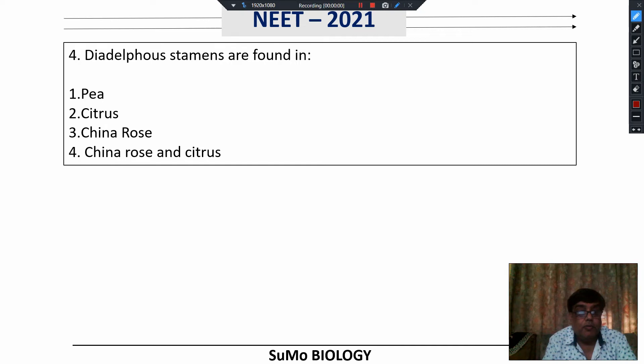Hello, welcome to Sumo Biology. We are discussing the NEET 2021 question paper, Biology. The question is: diadelphous stamens are found in which plant?